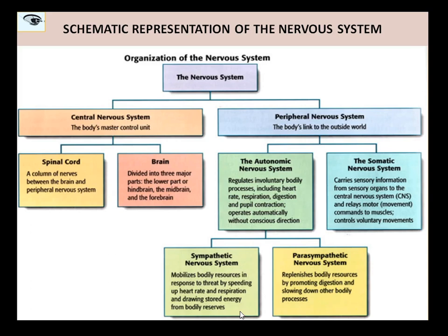The autonomic nervous system is governing activities which are normally not under the direct control of individuals. All the involuntary activities are being controlled by the autonomic nervous system — like breathing, all the internal functions, blood circulation, salivation, stomach contraction, and emotional reactions. They are involuntary; they are not under our direct control.